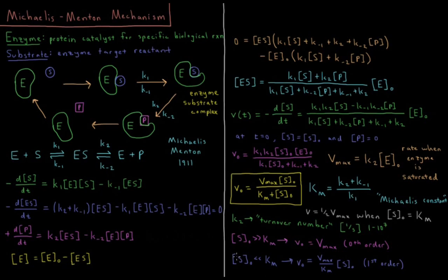Alternatively, when S0 is much less than Km, the denominator Km + S0 ≈ Km, so the initial rate becomes (Vmax/Km)·S0, and the reaction is completely first order in substrate. When there is only a little substrate, there is more enzyme than substrate, and any substrate diffusing through solution has plenty of enzyme available to convert it to product. So it is first order at low concentration and zero order at high concentration.